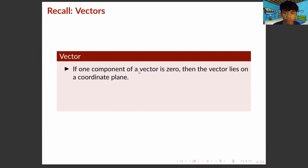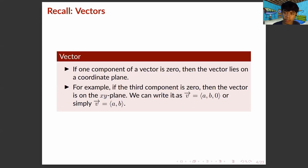If one component of a vector is zero, then the vector lies in a coordinate plane. For example, if the third component is zero, then the vector is on the XY plane. We can simply write this vector, which is equal to (A, B, 0), as vector V equals (A, B).